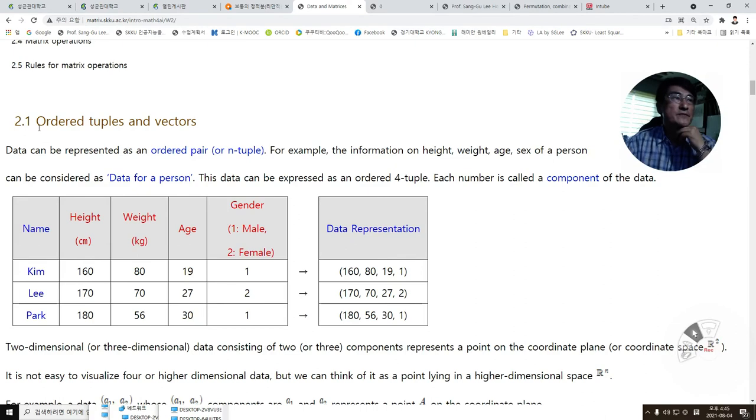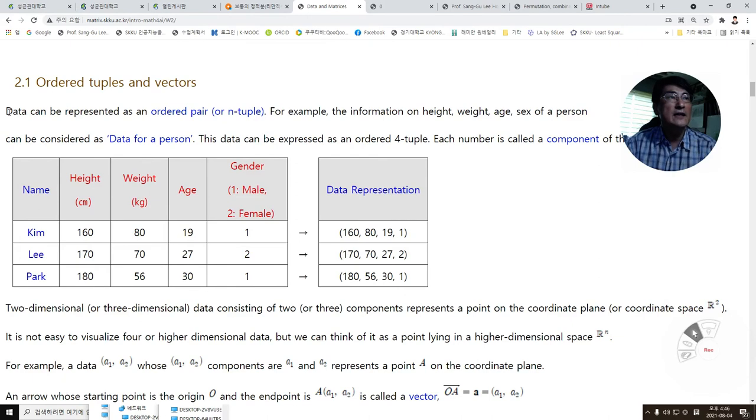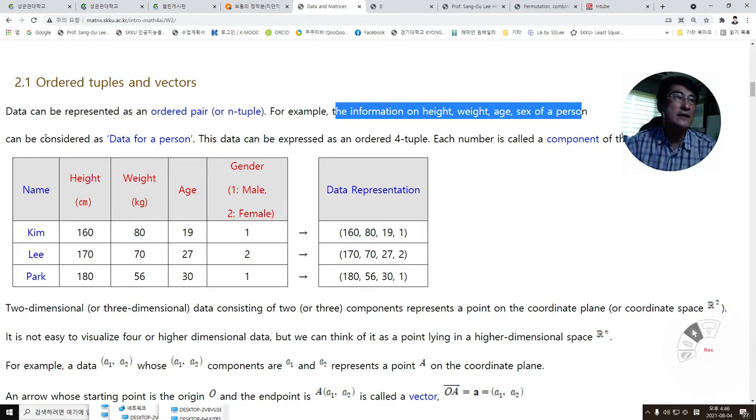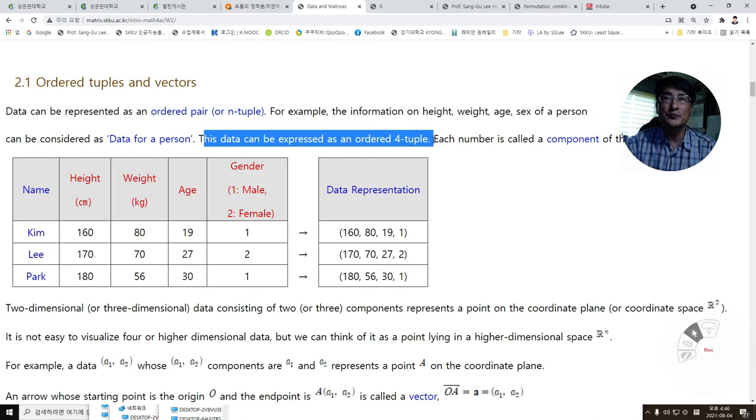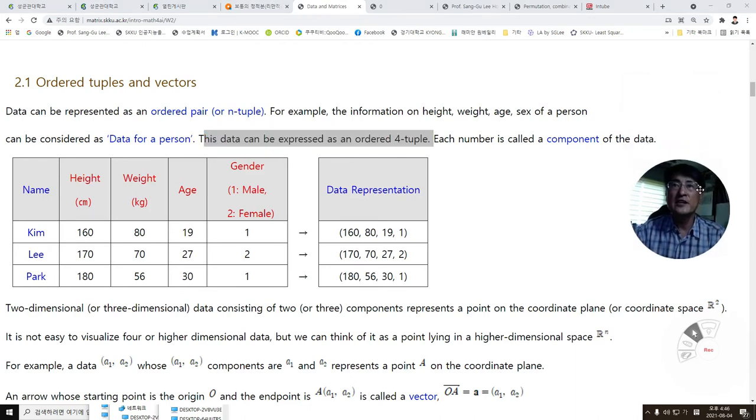Section 2.1: Ordered tuples and vectors. Data can be represented as an ordered pair or tuple. For example, the information on height, weight, age, and sex of a person can be considered as data for a person. This data can be expressed as an ordered four-tuple.